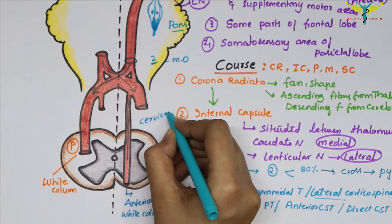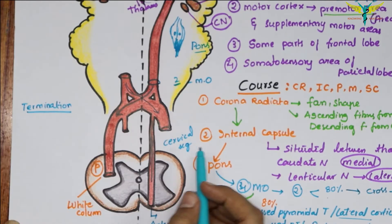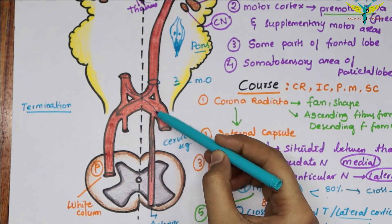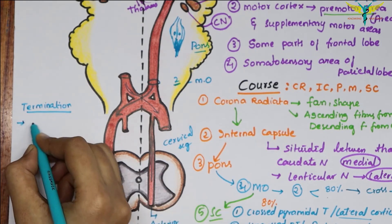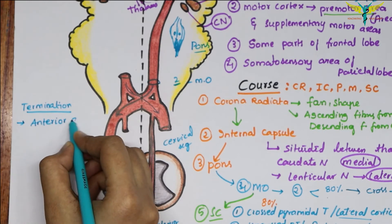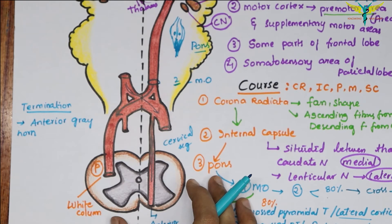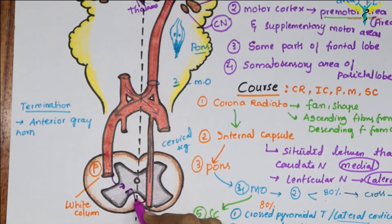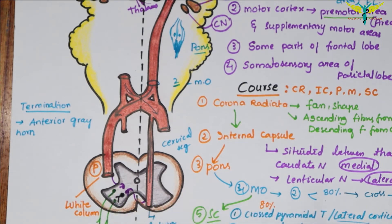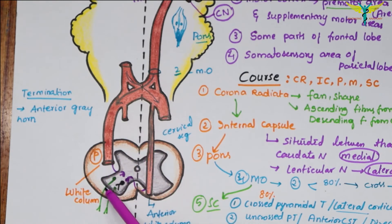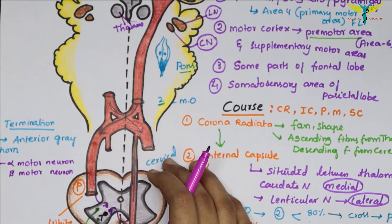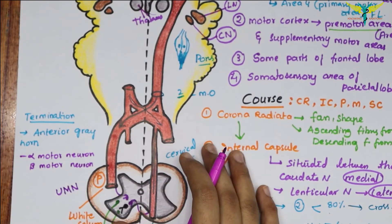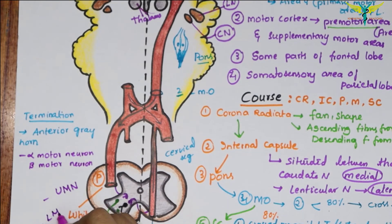All fibers of the pyramidal tracts — both crossed and uncrossed — terminate in the motor neurons of the anterior gray horn, either directly or through interneurons. The pyramidal tract fibers terminate on both alpha motor neurons and beta motor neurons. The neurons that give origin to the fibers of the pyramidal tract are called upper motor neurons, and the anterior motor neurons in the spinal cord are called lower motor neurons.